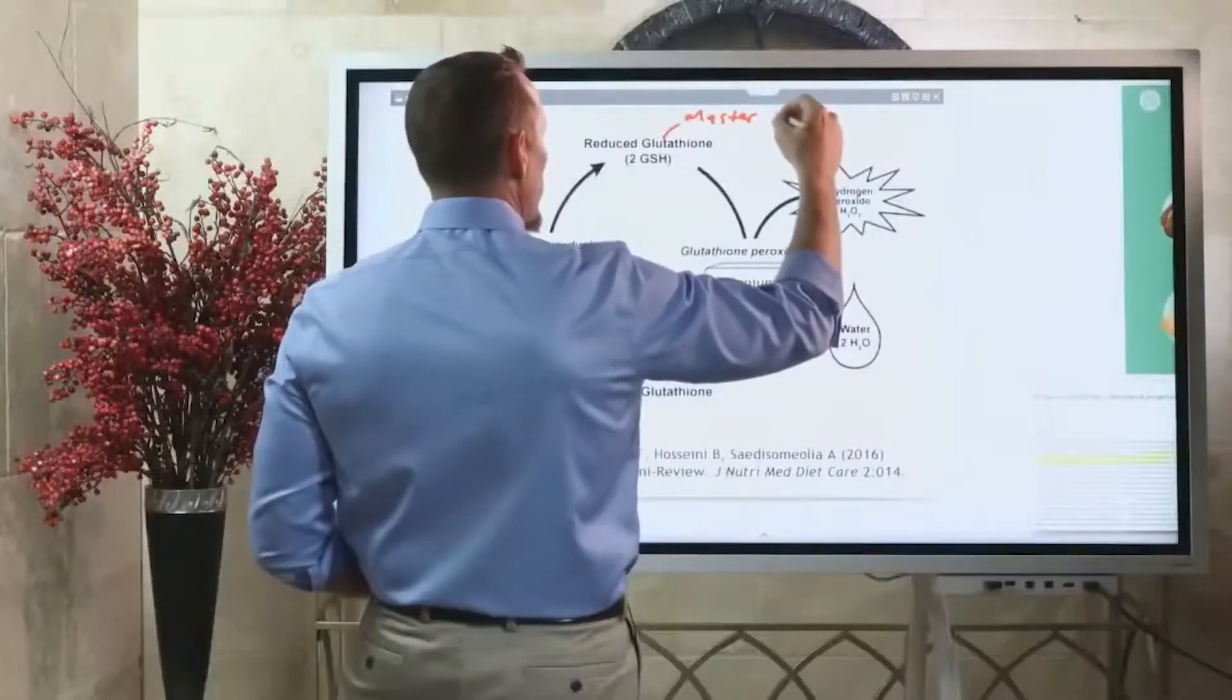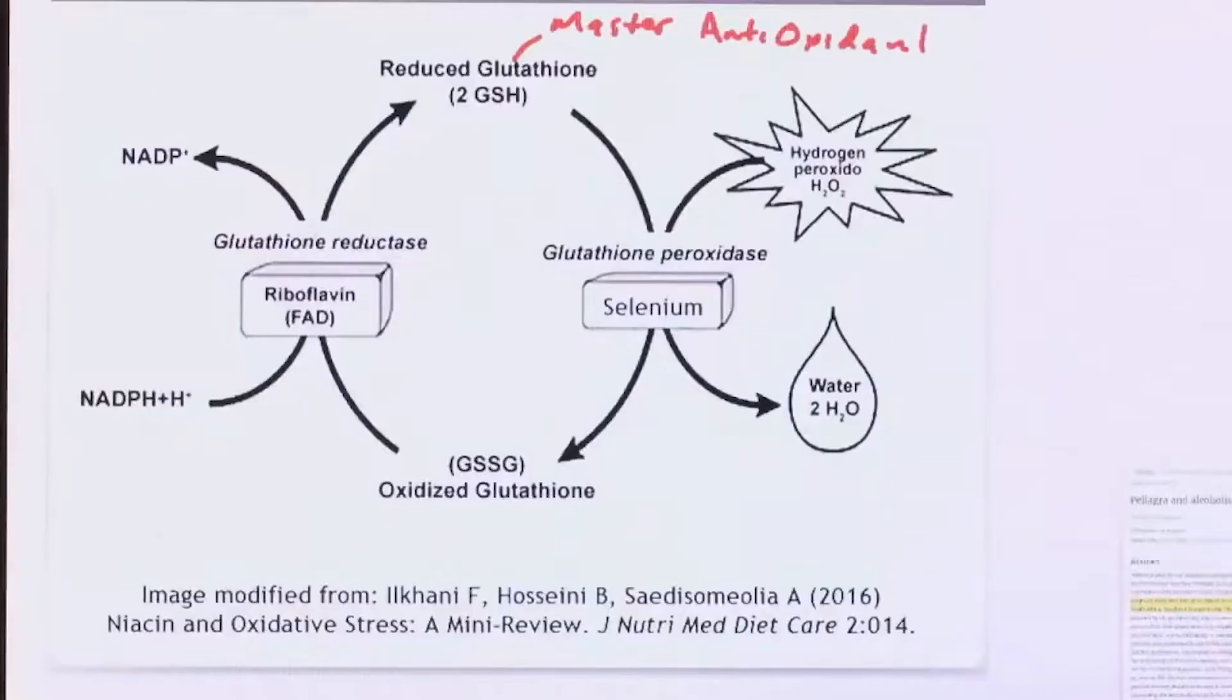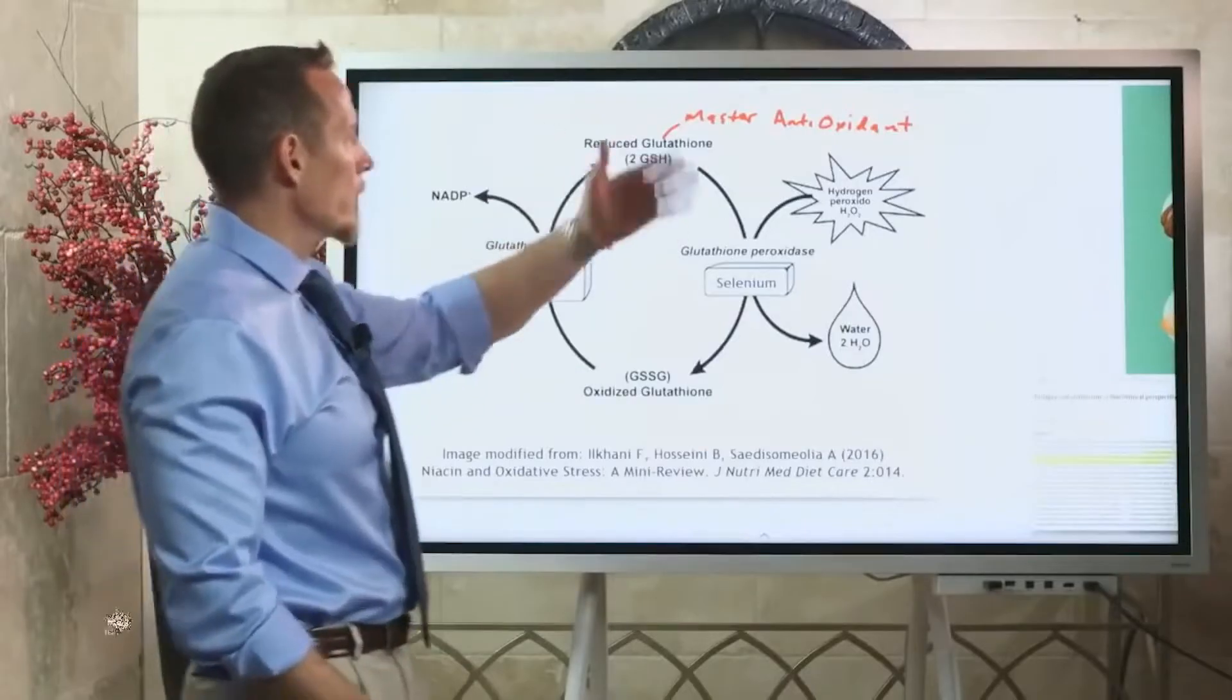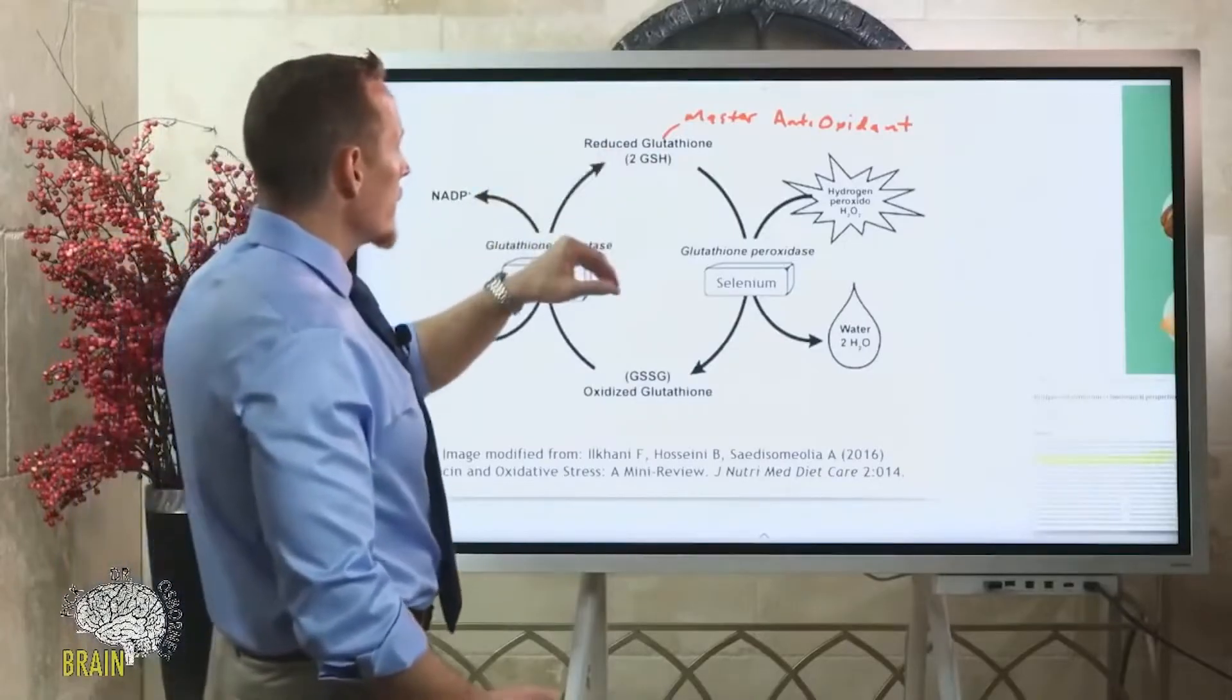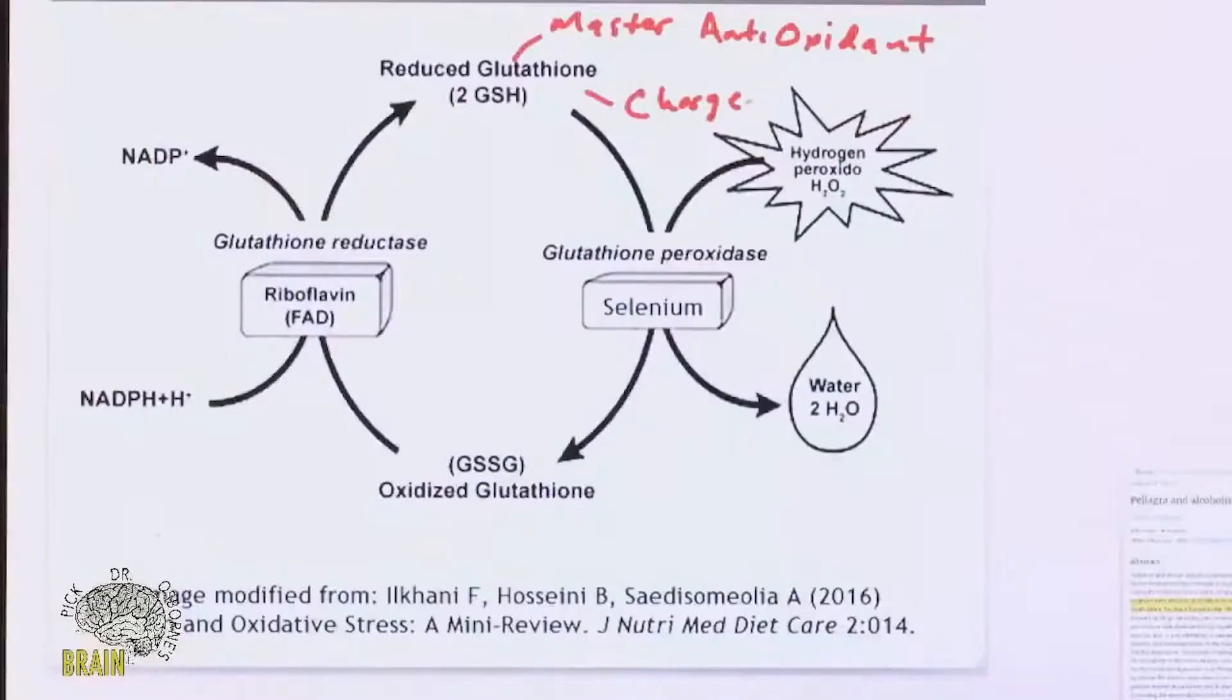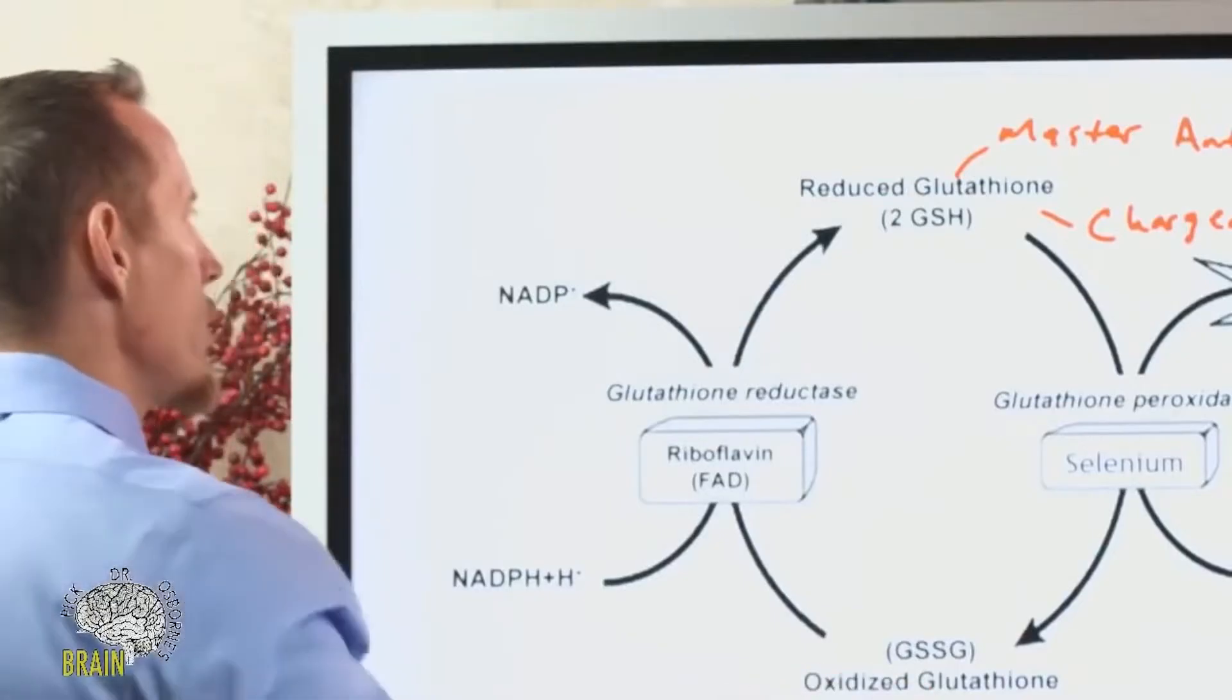A lot of people will take supplemental glutathione or will take N-acetylcysteine or NAC because it's helpful to help your body produce glutathione. NAC helps your body produce glutathione. But glutathione is a lot like your cell phone battery. It has to be charged, it has to be recharged. Once you burn through it, once glutathione is used up to protect you as an antioxidant, it becomes oxidized and it has to be regenerated.